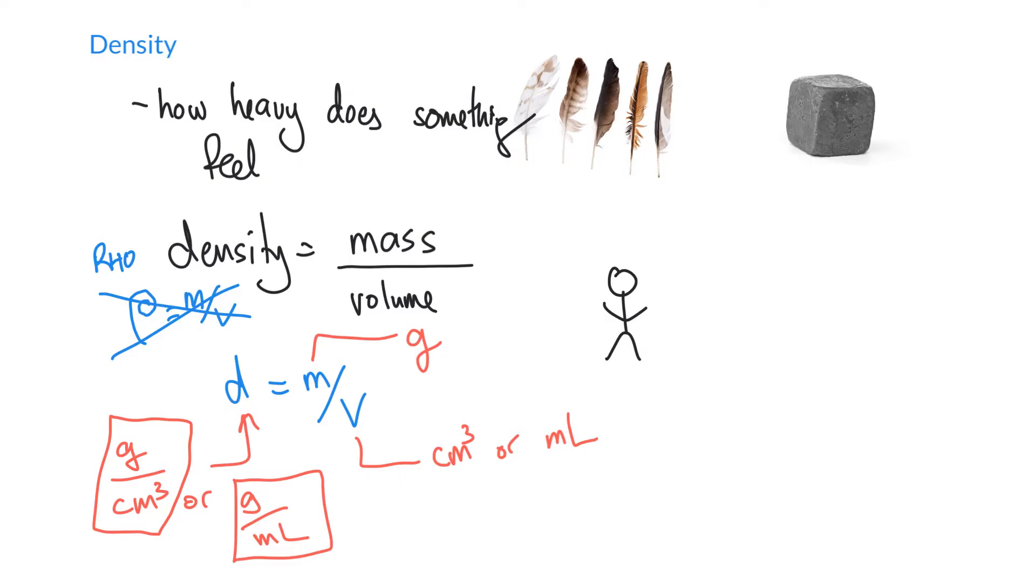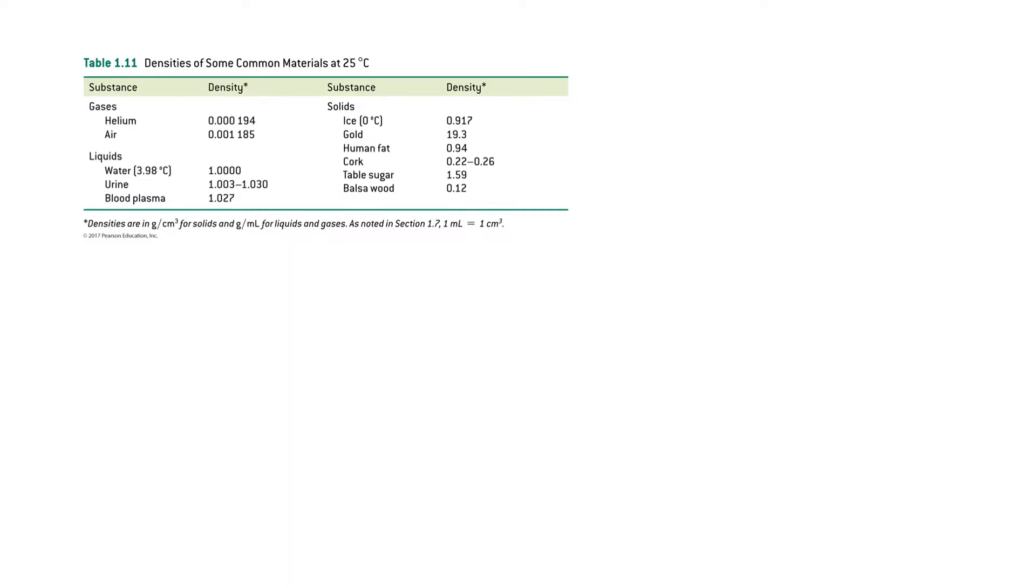So let's go ahead and look at some common densities. So this is right out of our textbook. This is a common set of densities. You see that gases have extremely low densities, about one thousandth that of water, which has a density of about one gram per milliliter at one degree C. So here it says grams per centimeter cubed for solids, grams per milliliter for liquids and gases. So I don't really pay attention to the difference between a milliliter and a centimeter cubed, but if you prefer to, that's totally fine.